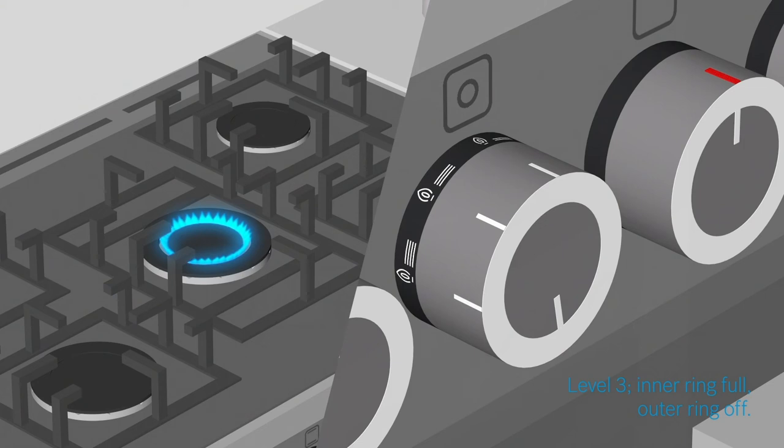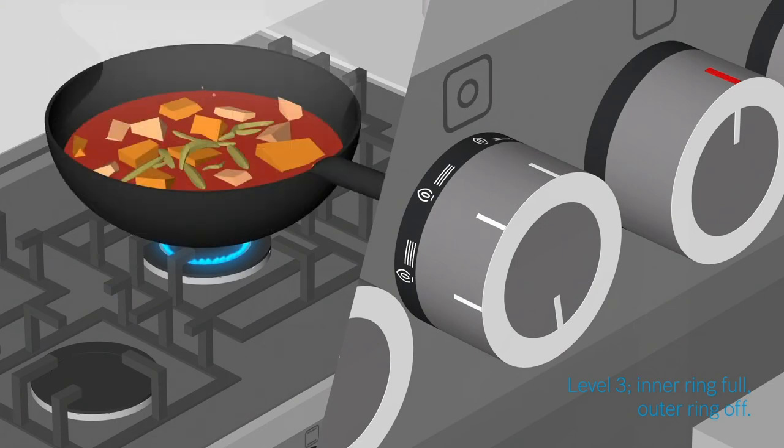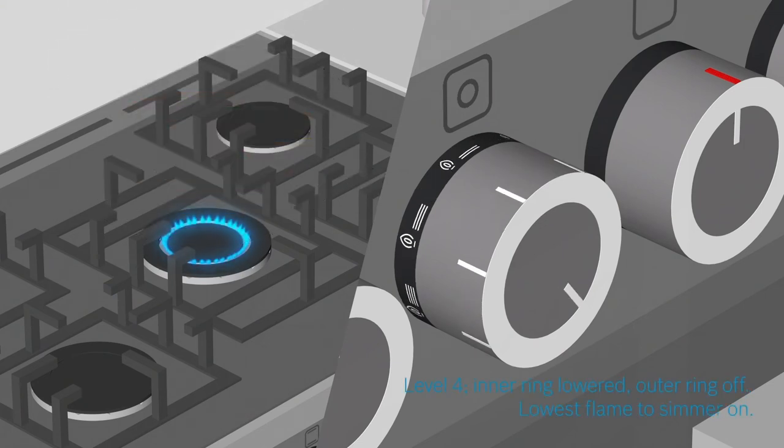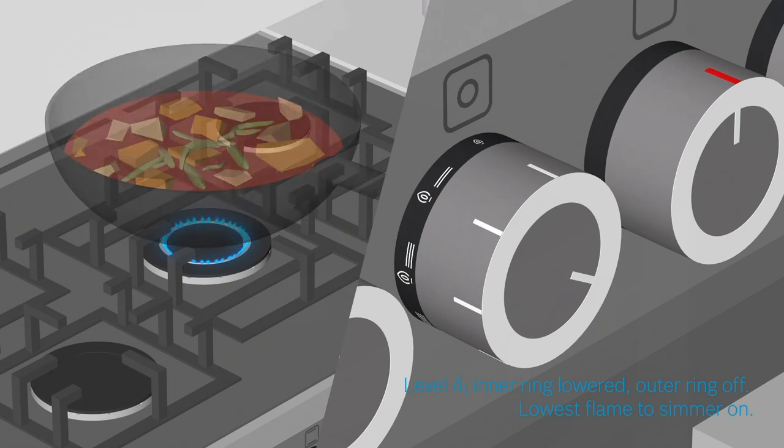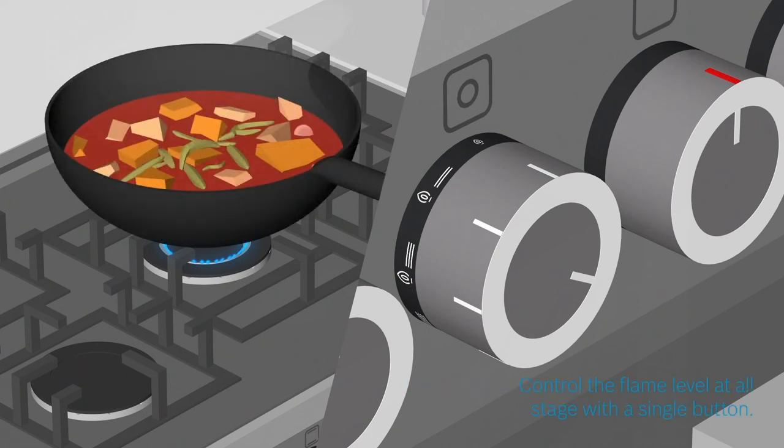Level three turns off the outer ring completely, leaving only the inner ring burning. And level four lowers the inner ring, giving you the lowest flame to simmer your dish.